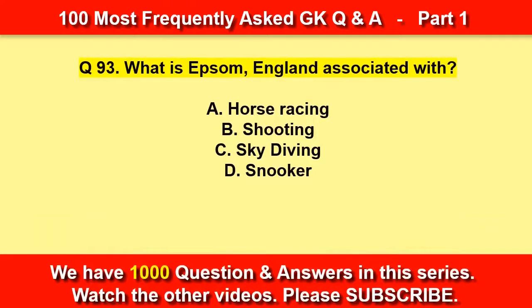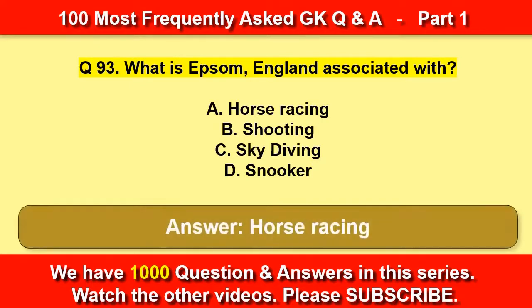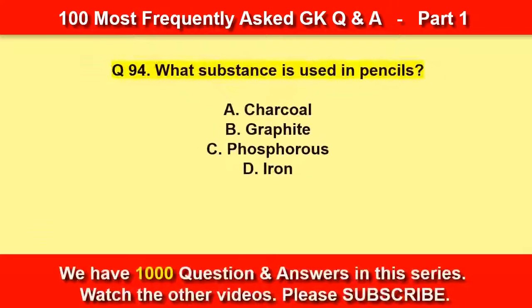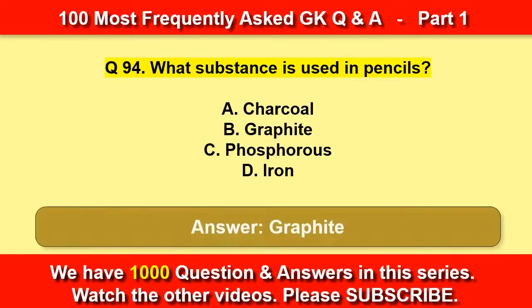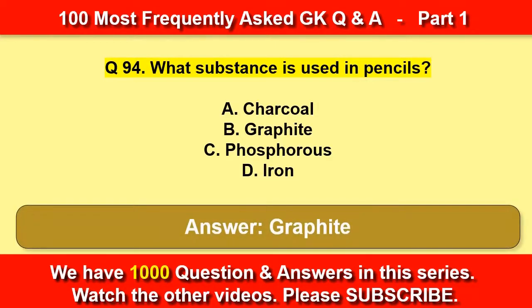What is Epsom in England associated with? Horse racing. What substance is used in pencils? Graphite.